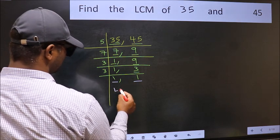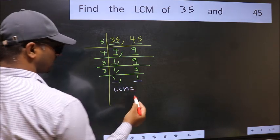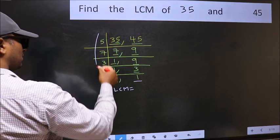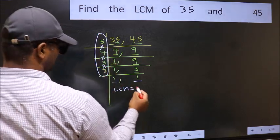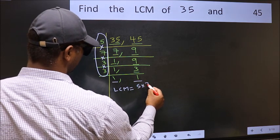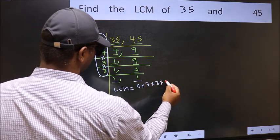So our LCM is the product of these numbers. That is 5 times 7 times 3 times 3.